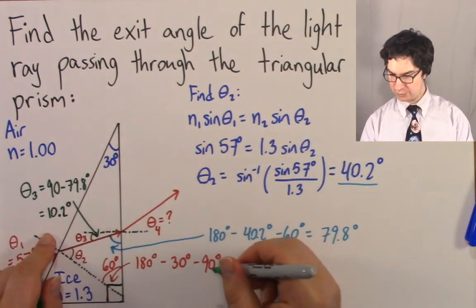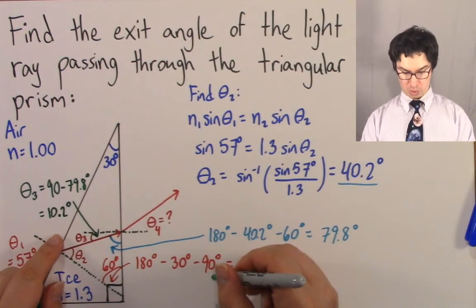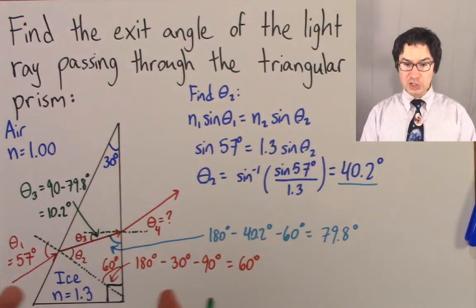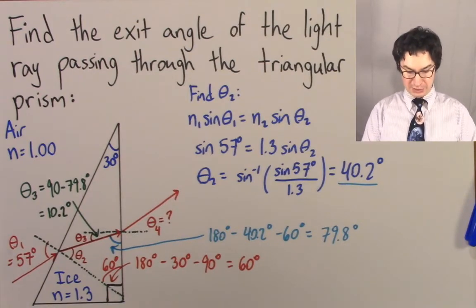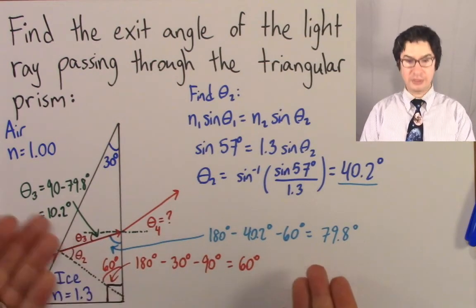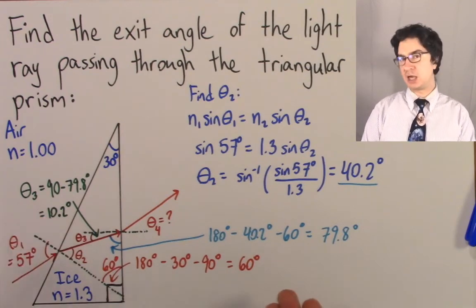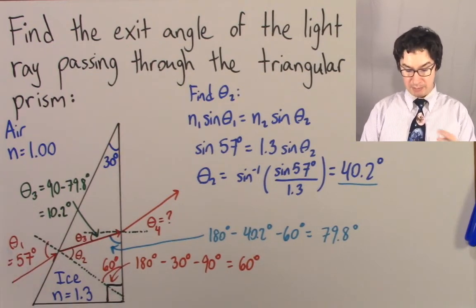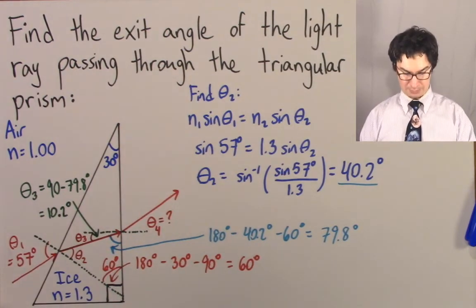Theta 3 is going to equal 10.2 degrees. Whew! Look at all the geometry we did in just five minutes. We started with a simple triangle, and within this triangle we did three geometric calculations — basic calculations from a geometry class — but we did them all to solve this problem.